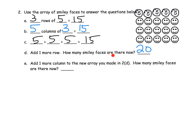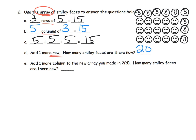Parents and teachers, the important thing about this lesson is that we're constantly focusing on the vocabulary: rows, columns, array. That's really what this is — it's all contextual, allowing our students to practice this vocabulary. Lastly, it says to add one more column to this new array. So if we're going to add a new column, we would need to add one, two, three, four more smiley faces to that new array.